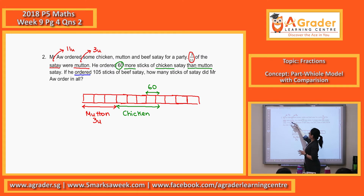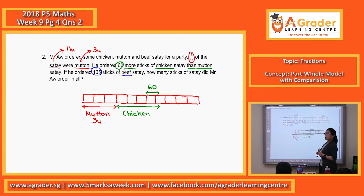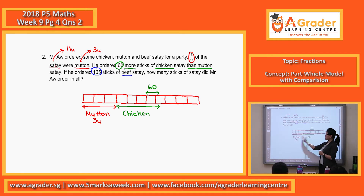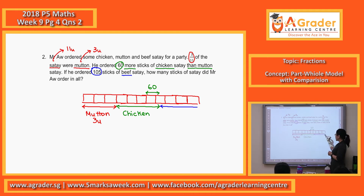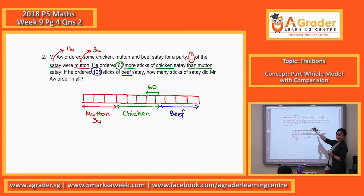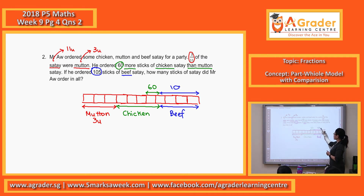He ordered 105 sticks of beef satay. From the first line we already know it's chicken, mutton and beef. So we got chicken, mutton, and the rest over here will simply be the beef. And this beef — they mentioned 105 — which is the same over here, the rest is 105.